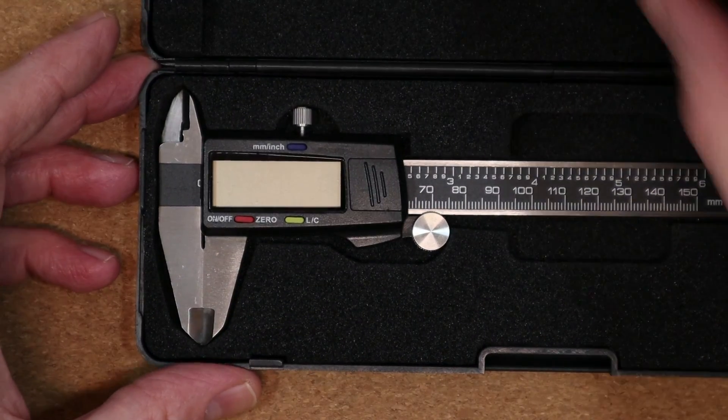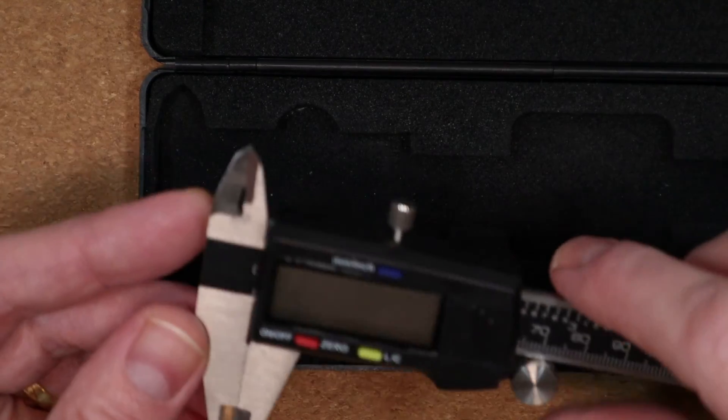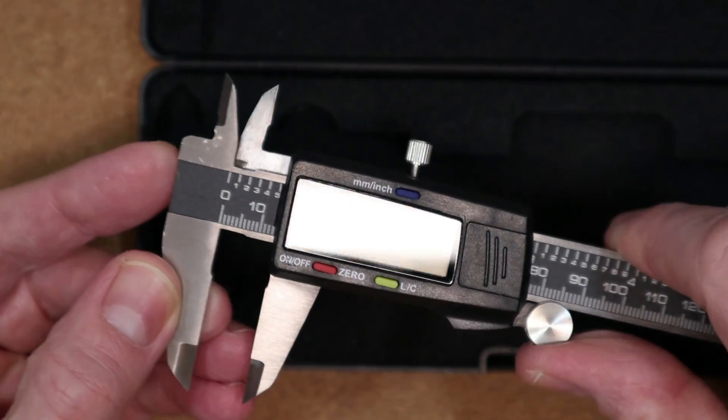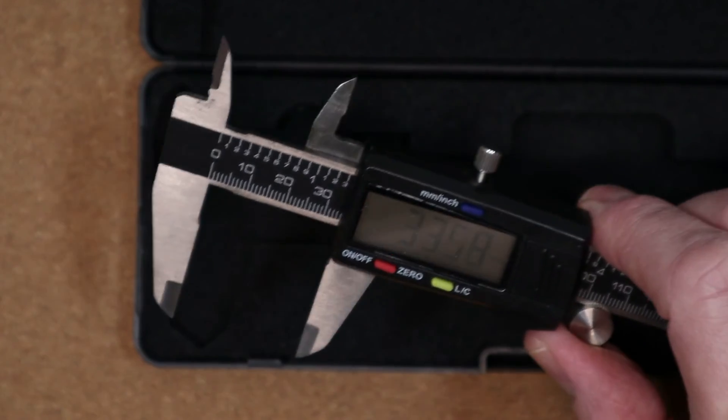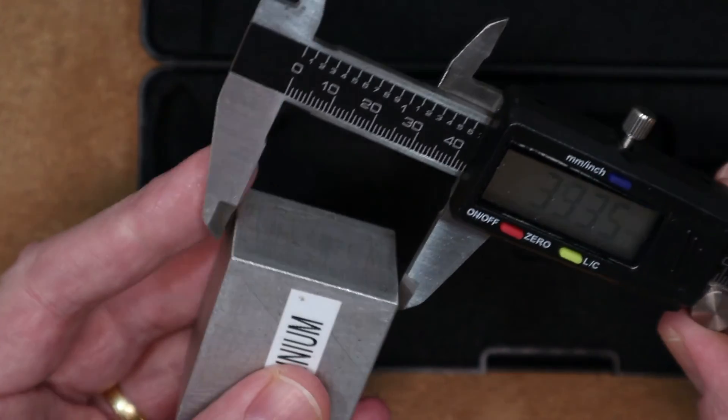If I use something like this, a set of digital calipers, then I can measure the length, breadth and height of each block with more precision than I did with the ruler. Still, I'm pretty happy with the results.